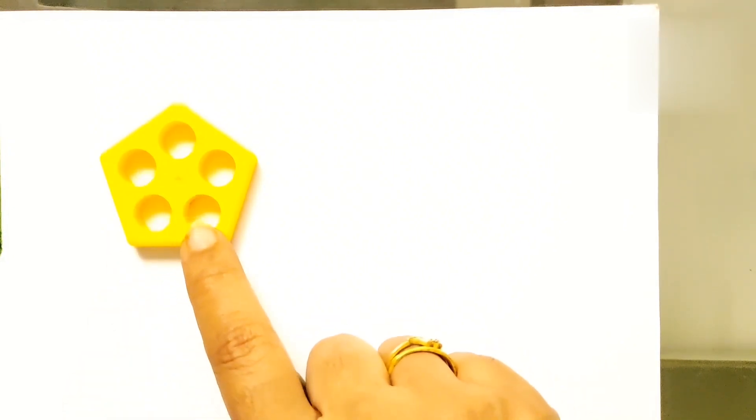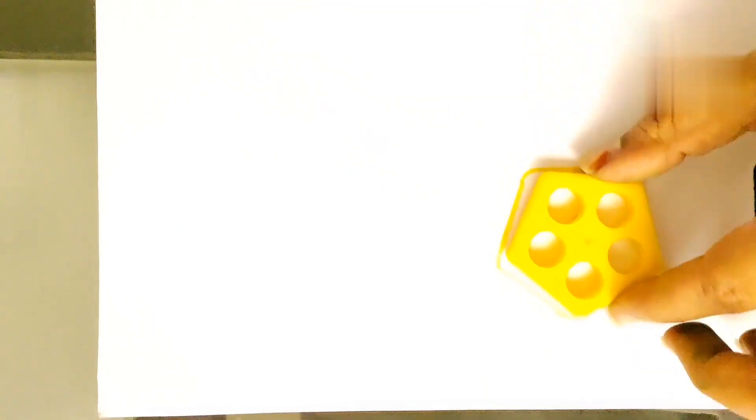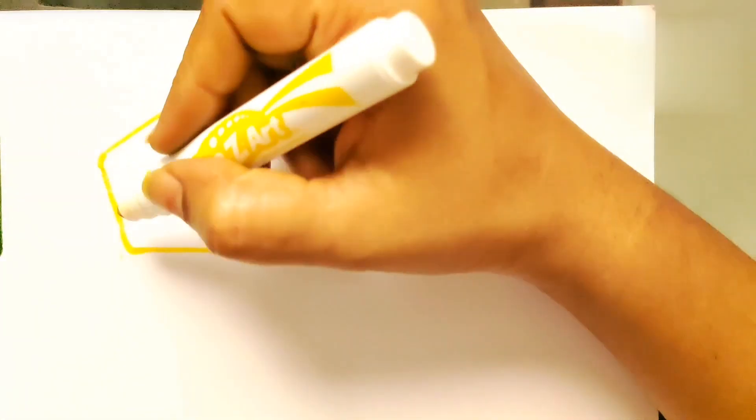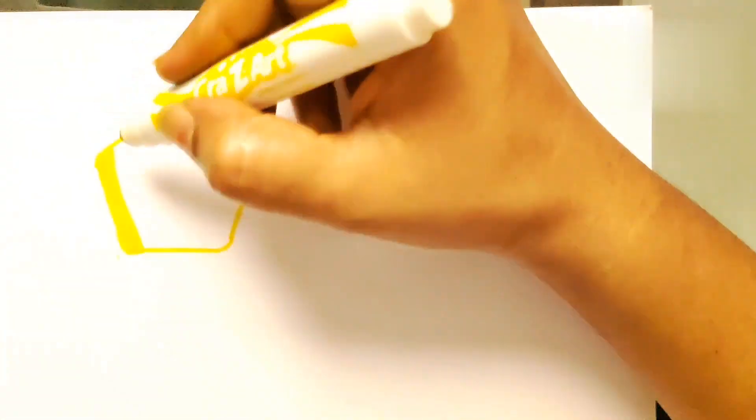Now we have a pentagon, and it is yellow in color. So let's draw the border of the pentagon. And yes, we have the pentagon to color it.